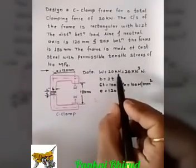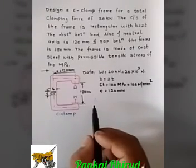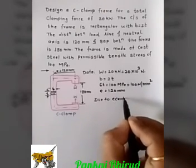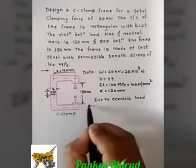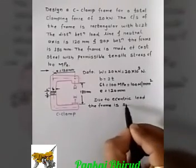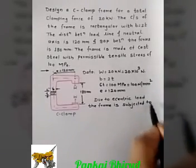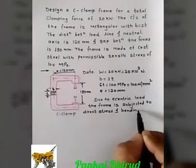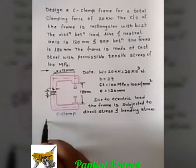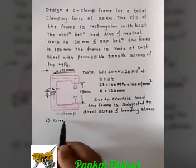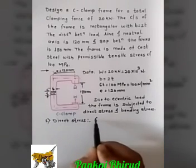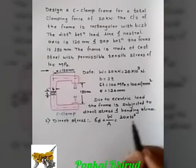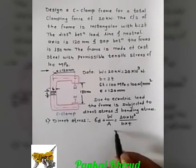Due to eccentric load of 20 kilo Newton, the frame is subjected to combined direct stress and bending stress. Let us calculate direct stress first. Direct stress σD is equal to W upon A, where W is 20×10³ and the area of the rectangular section is B into T.